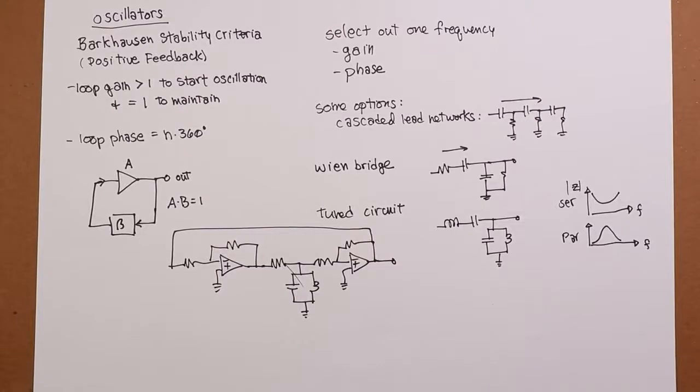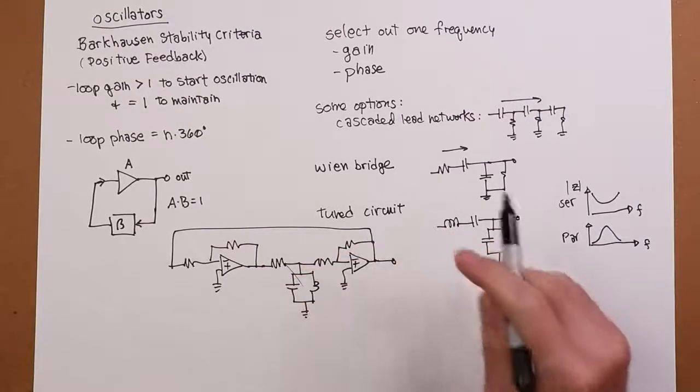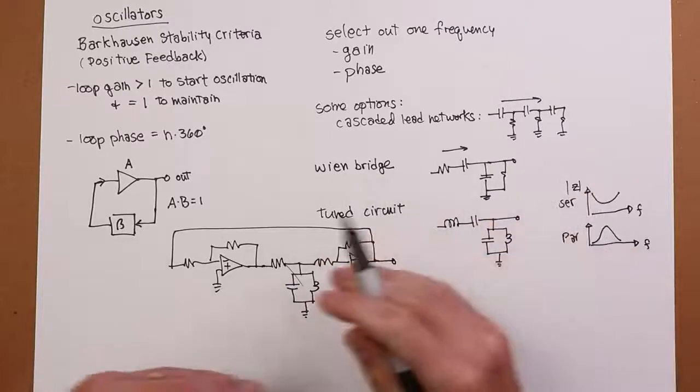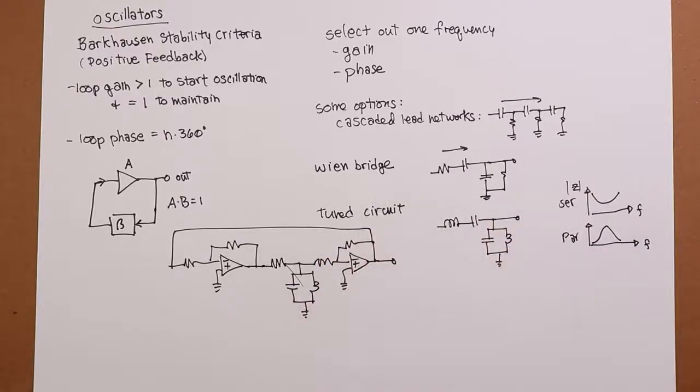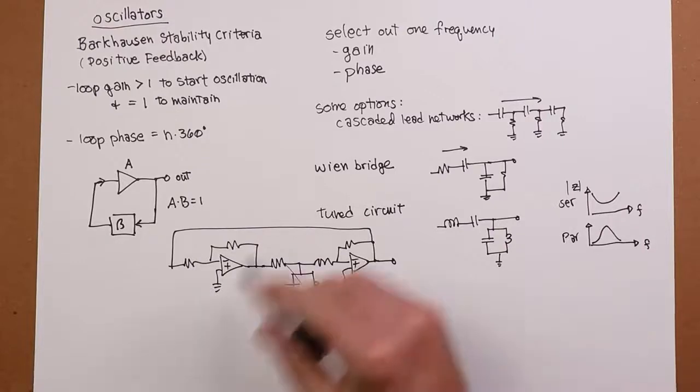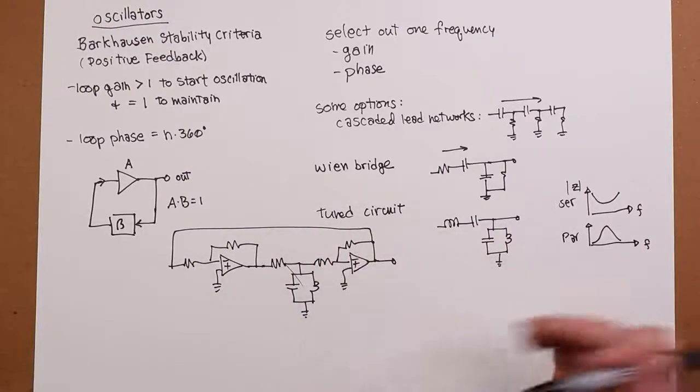So we do need some way of controlling the gain in a practical circuit. Otherwise, your sine wave is going to end up having clipped top and bottom, which is not exactly hi-fi. Once you do generate a sine wave, you can do other things. You can, for example, run it through a comparator to generate a square wave. You could integrate the square wave to get a triangle wave. There are different sorts of manipulations you can do to get other wave shapes. But that's the basic idea.